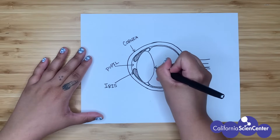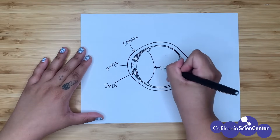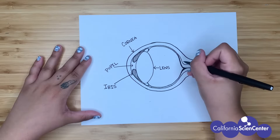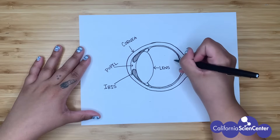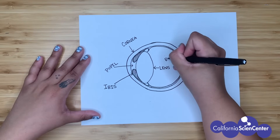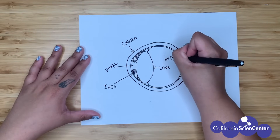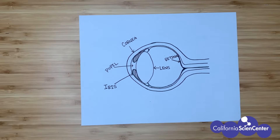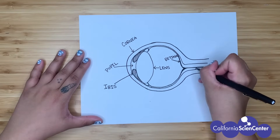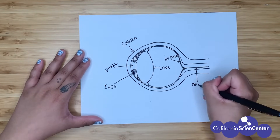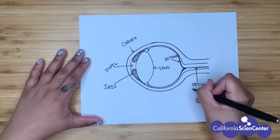The lens is a transparent structure in the eye — it helps you focus on what is in front of you with the help of light. The retina is an important part of the eye that picks up images as they are in front of you; the retina helps you see colors. The optic nerve is the connection between the eye and the brain — it transmits messages from the eye so that the brain can make sense of it.